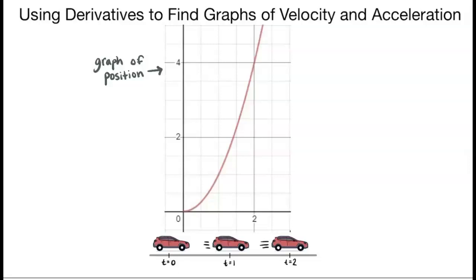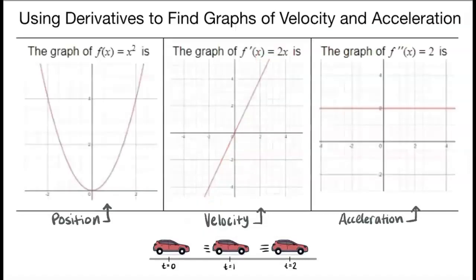Okay I think I understand the concepts but what does that look like mathematically? If we define position as some function f of x then the velocity of the function is the first derivative f prime of x and the acceleration of the function is the second derivative f double prime of x.